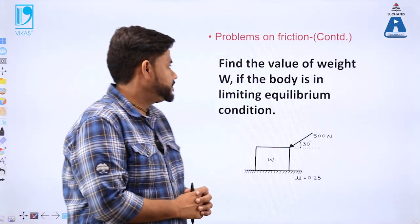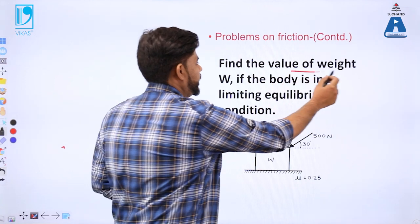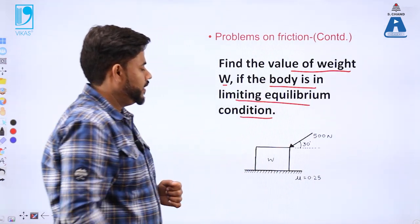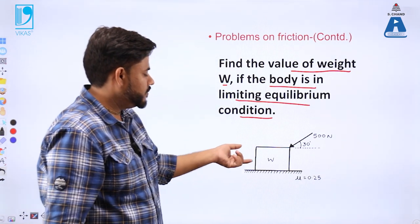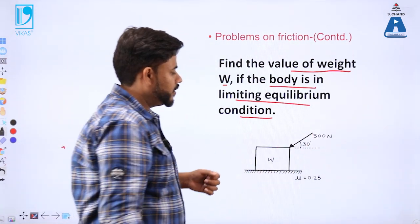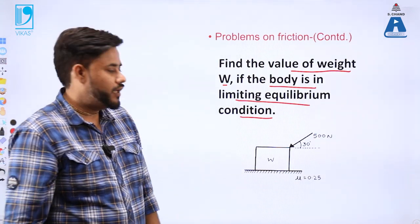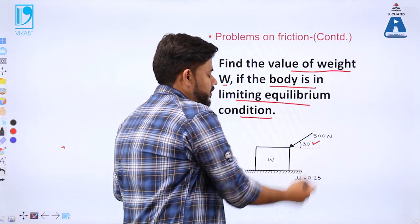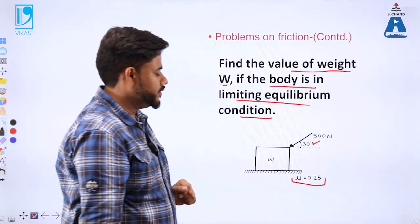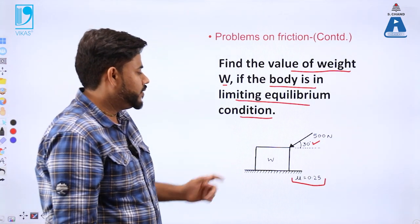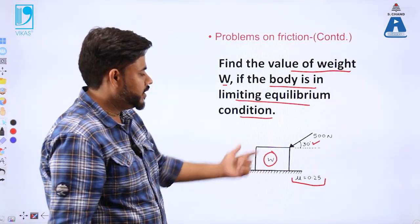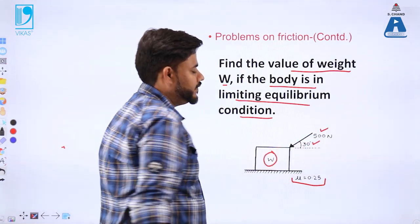The question says: find the value of weight W if the body is in limiting equilibrium condition. As far as the diagram is concerned, I have a block with an unknown weight W, and I need to push this block with a force of 500 Newton at an angle of inclination of 30 degrees with the horizontal floor. The coefficient of friction is 0.25. The question asks: how much is the value of W so that this block can be pushed by a force of 500 Newton?